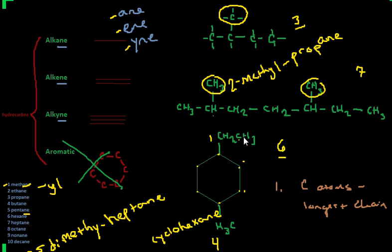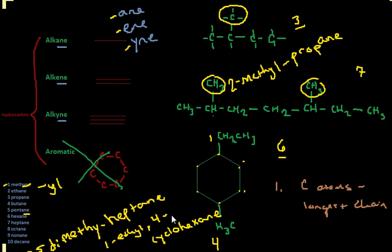So far we have cyclohexane, but now we need to specify where our substituents are. First off, we're going to start with C because it starts with a C, so it wins in the alphabet. So we have one C, and then we have two Cs — so if we have two Cs, it's an ethyl group. We would have 1-ethyl, then we count two, three, four — and this is going to be a methyl group because there's only one C there. So: 1-ethyl-4-methylcyclohexane. That's our entire name.